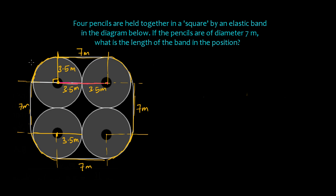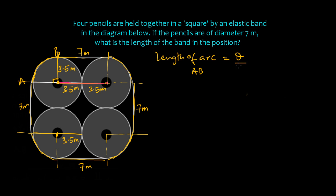All arc lengths are equal. To calculate the length of an arc from point A to point B, we use the formula: length of arc = (theta / 360) × 2πr. The angle at each corner is 90 degrees, so theta is 90 degrees.